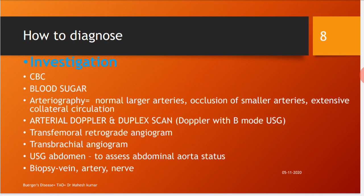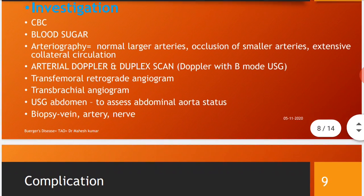Other investigations include transfemoral retrograde angiogram, transbrachial angiogram, and USG abdomen — used to assess abdominal aorta status for any blockage or deformity. Biopsy of the vein, artery, and nerve is required occasionally if there is any doubt in making the diagnosis.